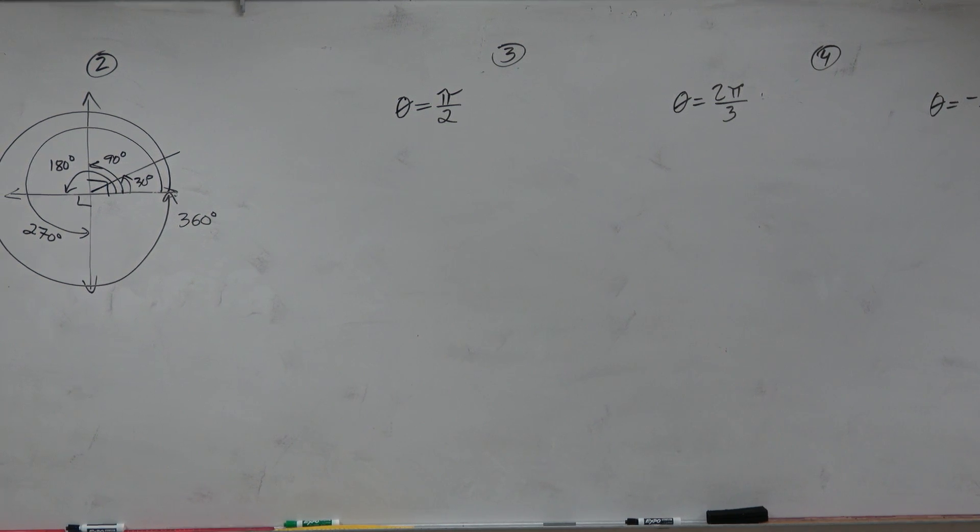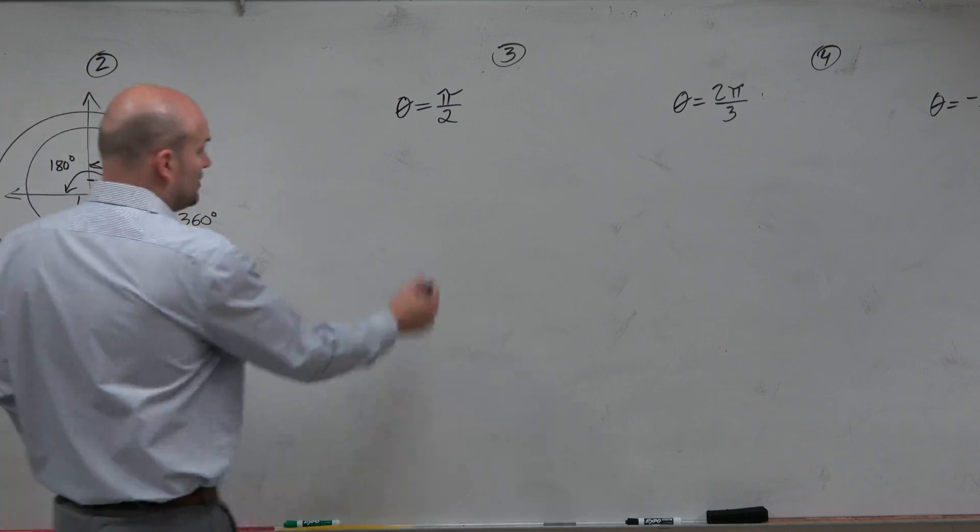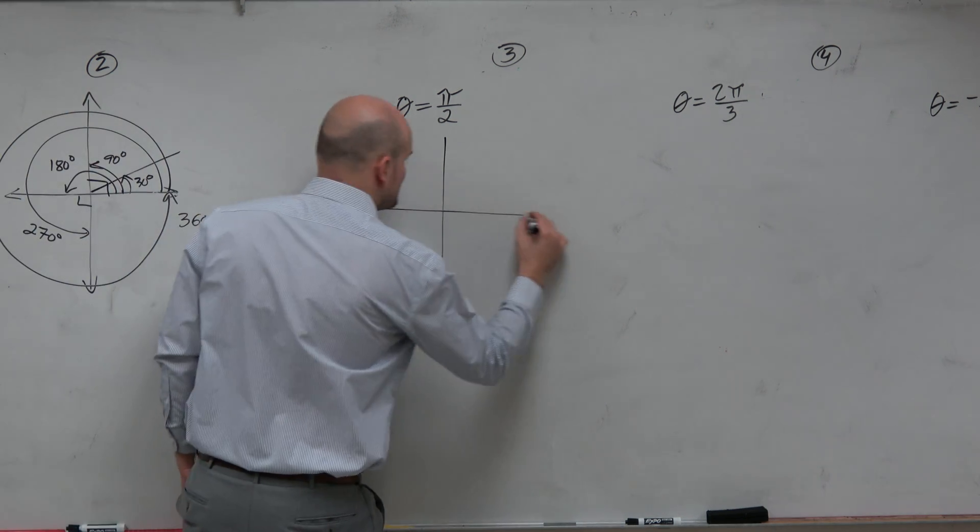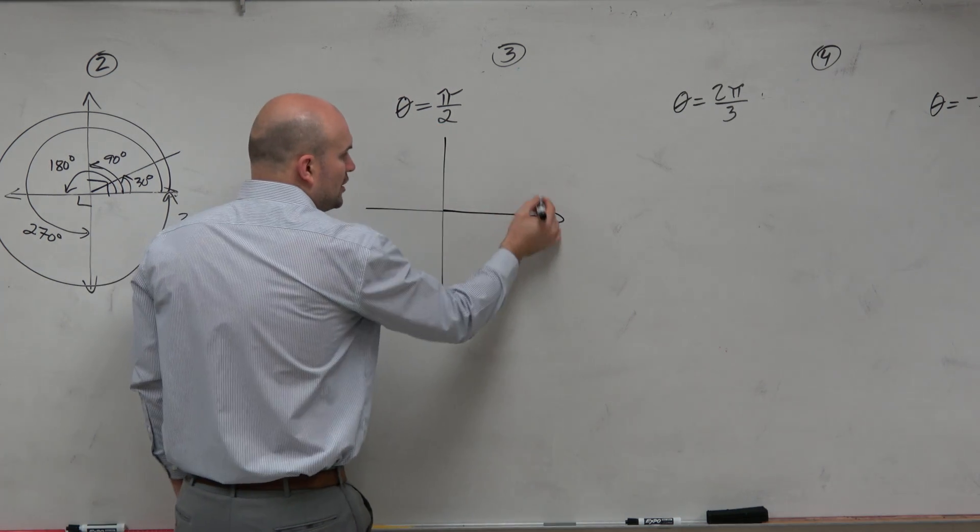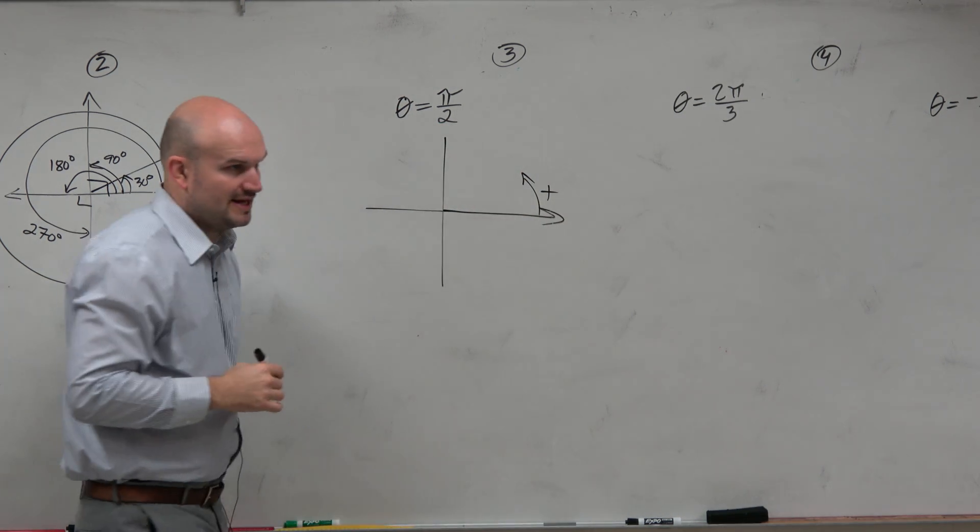So you guys get an idea. So pi halves. If I asked you to sketch pi halves in standard form, well, you know that we have this kind of x and y-axis. We know we're going to start here, and we know, since it's positive, we're going to rotate in that direction.